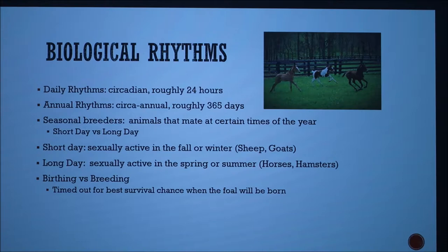Mares are seasonal breeders, which means they mate at a certain time of the year. They can either be short day or long day breeders. Short day breeders are sexually active in the fall or winter — examples are sheep and goats. Long day breeders are sexually active in the spring or summer, with examples being horses and hamsters.